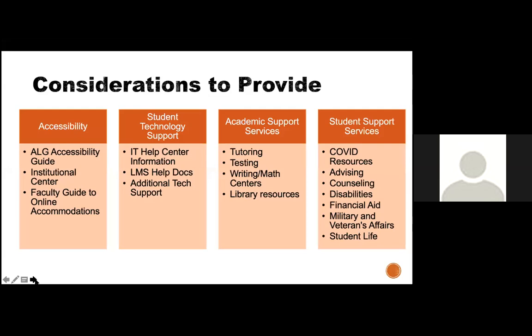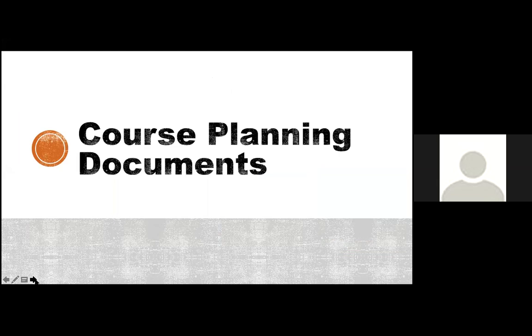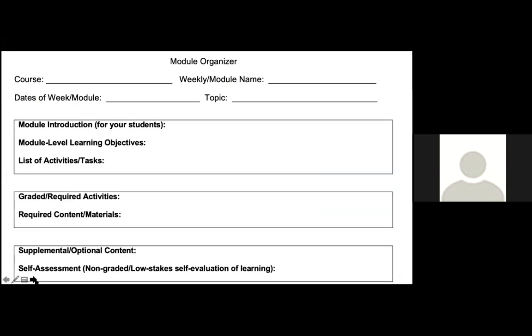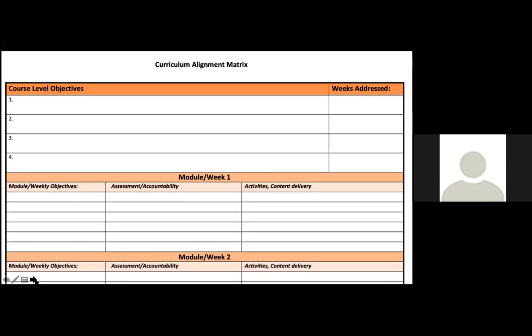Most importantly right now, students need to know where to get additional technology support. I have course planning documents you'll have access to: an alignment chart, a module organizer similar to a lesson plan — which many faculty convert into an overview page for students — and a semester planning document divided by weeks through week 16, covering module-level objectives, assessments, accountability, and aligned activities. This is for you to design the course, ensuring everything is aligned, though you could share it with students.